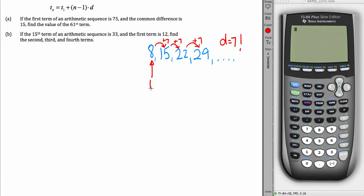The first term is 8. That's T1. The fourth term, 1, 2, 3, 4, is 29. N equals 4, so T sub 4 equals 29.